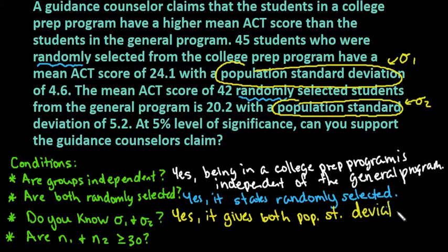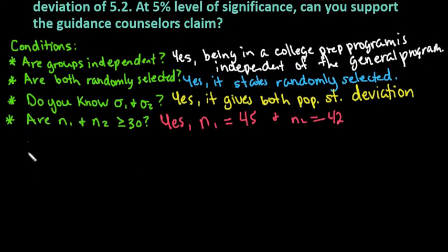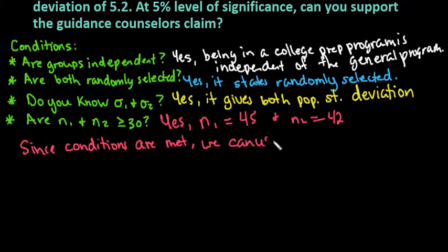If you only knew the sample standard deviation, you would use the two-sample t-test for independent samples. For the central limit theorem, you need samples greater than or equal to 30, or a normally distributed population. Here, n one is 45 and n two is 42 — both greater than 30, so our sample sizes are good. Since all conditions are met, we can use a two-sample z-test.